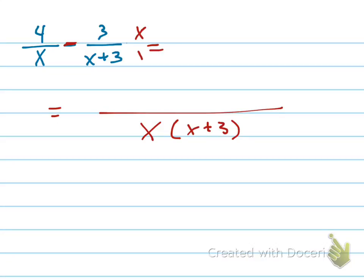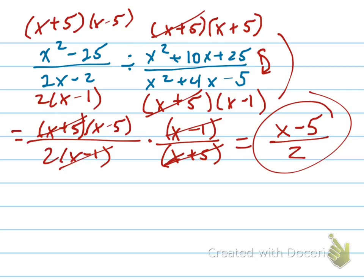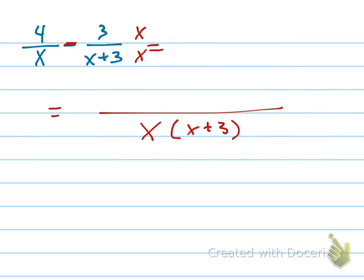So I'm going to multiply this by x on the top and bottom. I'm going to multiply this by x plus 3 on the top and the bottom. And I'm going to get 4 times x plus 3 on the top minus 3x on the bottom.